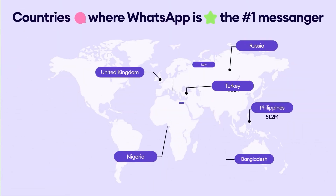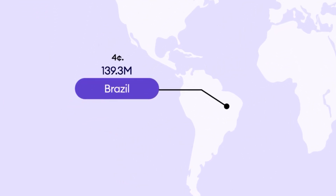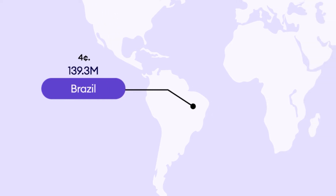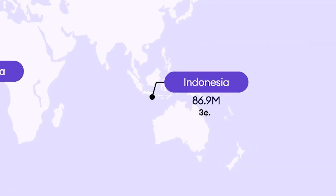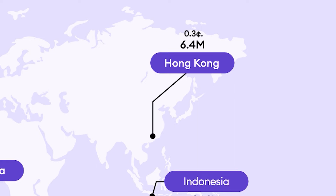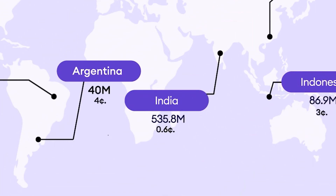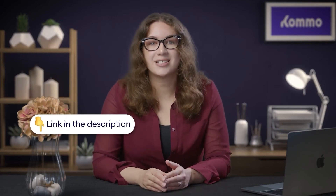The pricing for WhatsApp Business API varies depending on where your customers are located — in some countries the cost is higher than others. Let's look at some countries with the largest WhatsApp user base. Brazil, with nearly 140 million WhatsApp users, has a cost of about 4 cents per conversation. Argentina, with over 40 million active users, also averages 4 cents per conversation. Indonesia is in the top 5 for WhatsApp usage, with an average of 3 cents per conversation. In Hong Kong, the average cost is 0.3 cents, while India — with the largest number of WhatsApp users worldwide — has an average cost of 0.6 cents per conversation. You can find a link in the description for the complete list of countries and their prices.